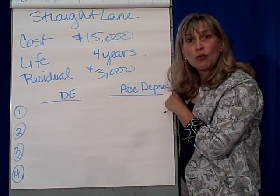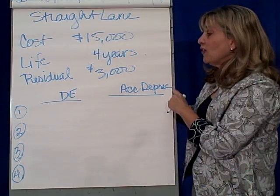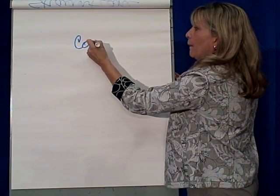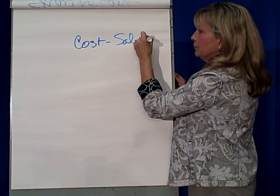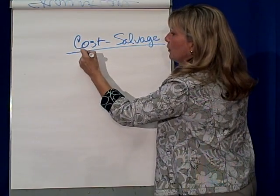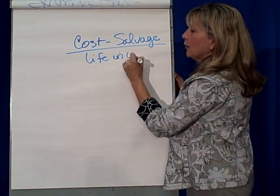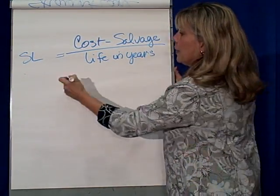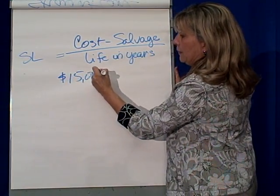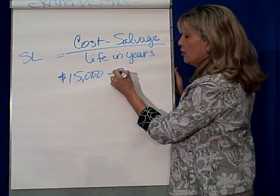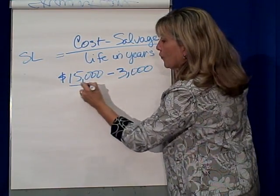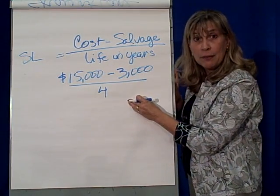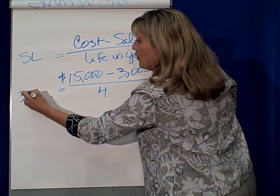When we do straight-line depreciation, it's very simply this: cost minus the salvage over its life in years. So for straight line, it's going to be the cost of $15,000 minus the salvage or residual value of $3,000, over the life of four years. So this would be $12,000 divided by 4, or $3,000 a year.